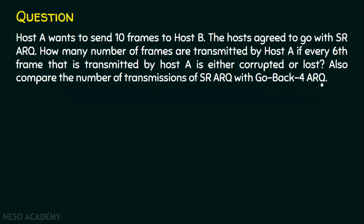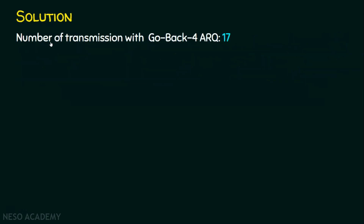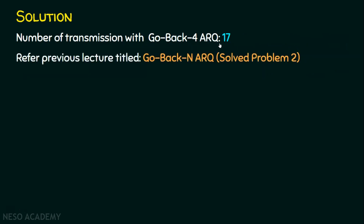In Go Back N ARQ, whatever frames are in the current window, all frames are retransmitted. Whereas in Selective Repeat ARQ, only the lost or corrupted frames are retransmitted. The number of transmissions with Go Back N ARQ is 17 — we have already solved this problem. I request you to watch my previous lecture titled 'Go Back N ARQ Solved Problem 2.'